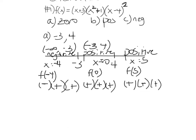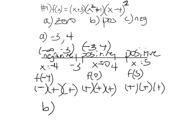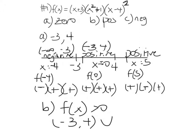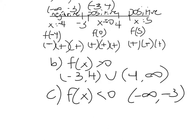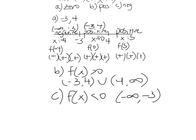Once you've done your sign chart, now you can answer their questions. Part B wants to know when is f of x positive — positive means greater than 0, but not equal to 0. Our positives are from negative 3 to 4, union 4 to infinity. I did not include 4. At 4 I'm 0, and 0 is not positive — 0 is not greater than 0. Part C was where is our graph negative, where is f of x less than 0? That was during the first interval: negative infinity to negative 3.